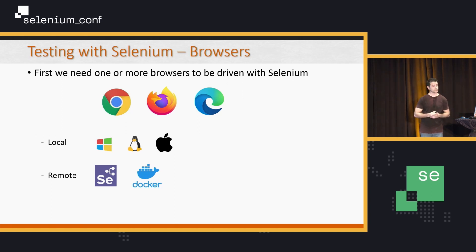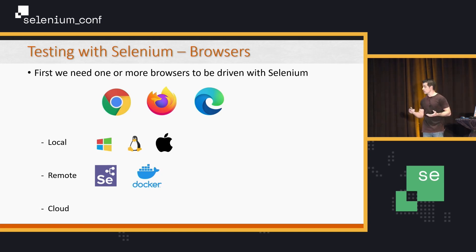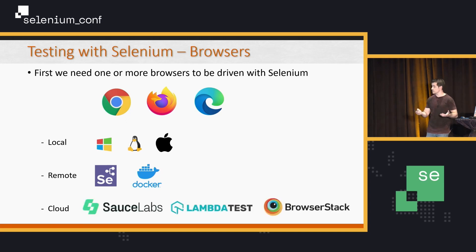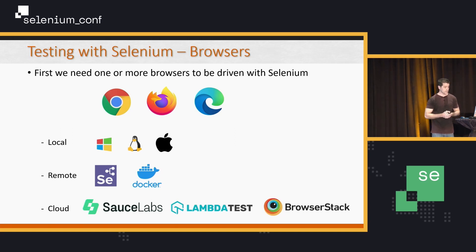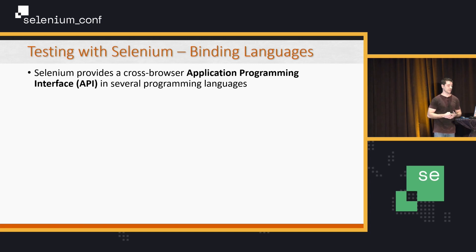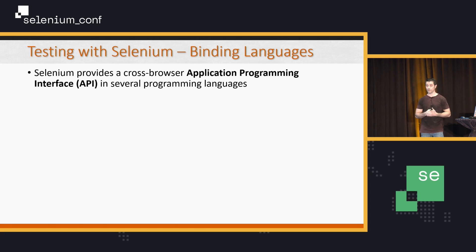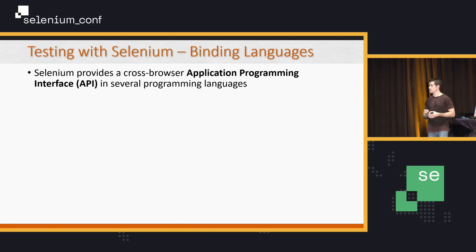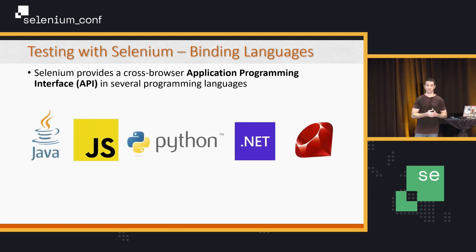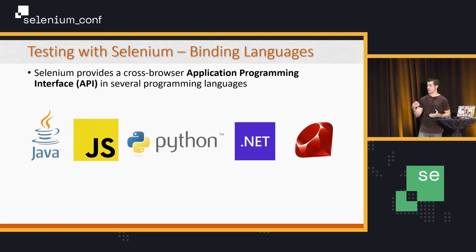Browsers can also be in the cloud — there are vendors that provide cloud solutions, like Sauce Labs and BrowserStack, which provide a browser as a service. In addition to the browser, we need a language. Selenium WebDriver provides a cross-browser API for controlling browsers, and the Selenium project officially supports Java, JavaScript, Python, .NET, and Ruby.